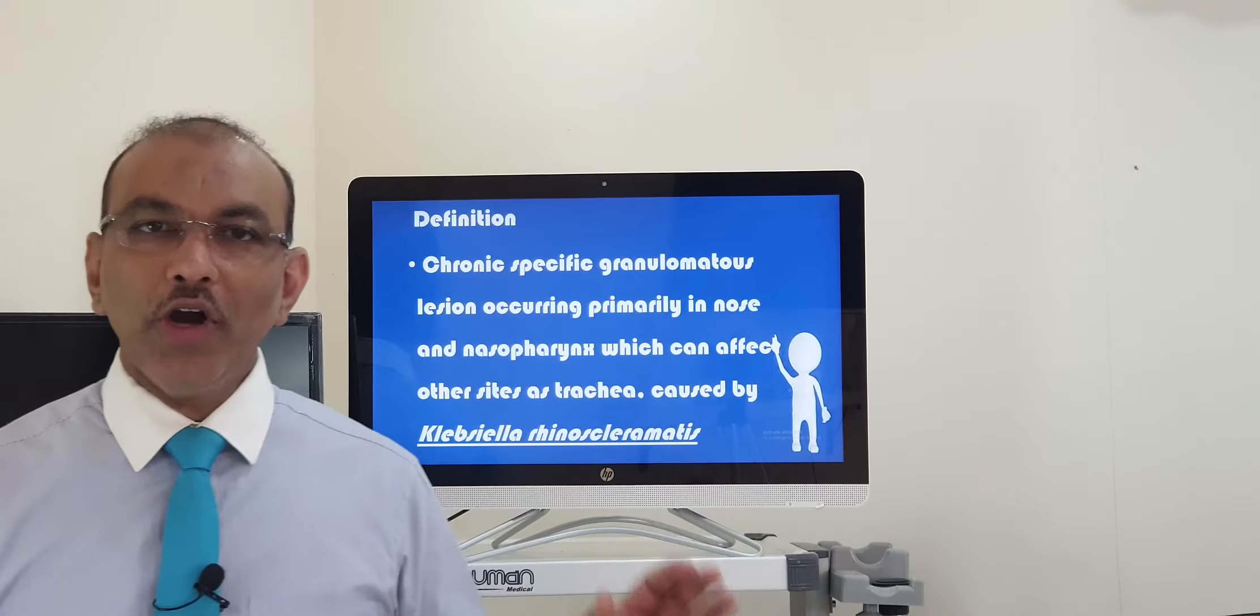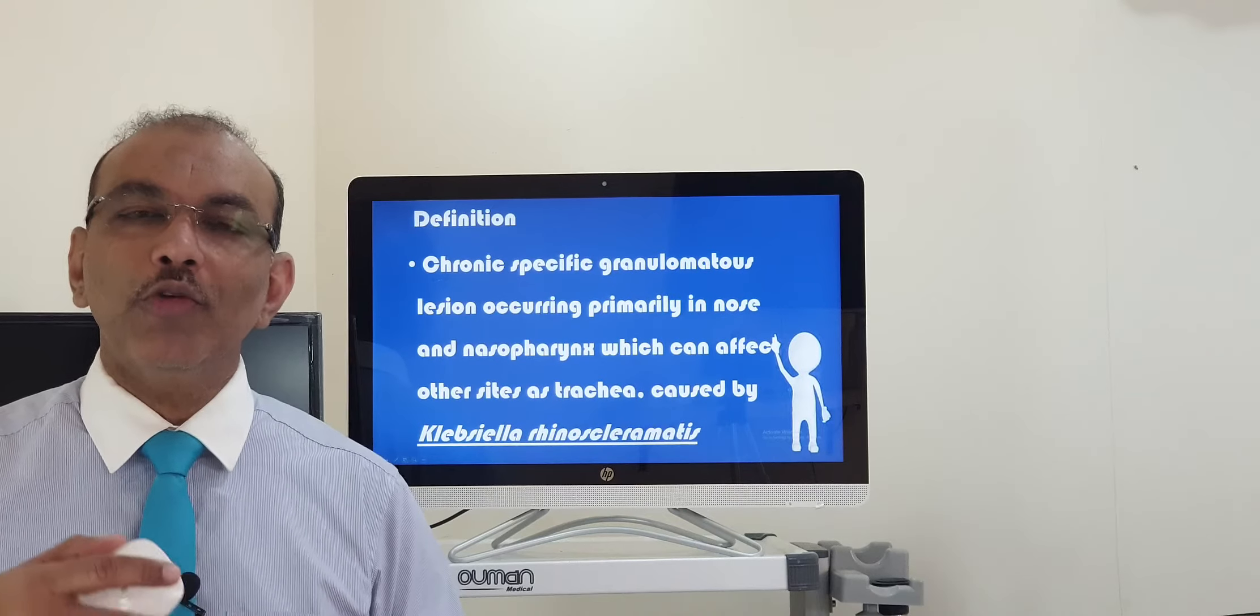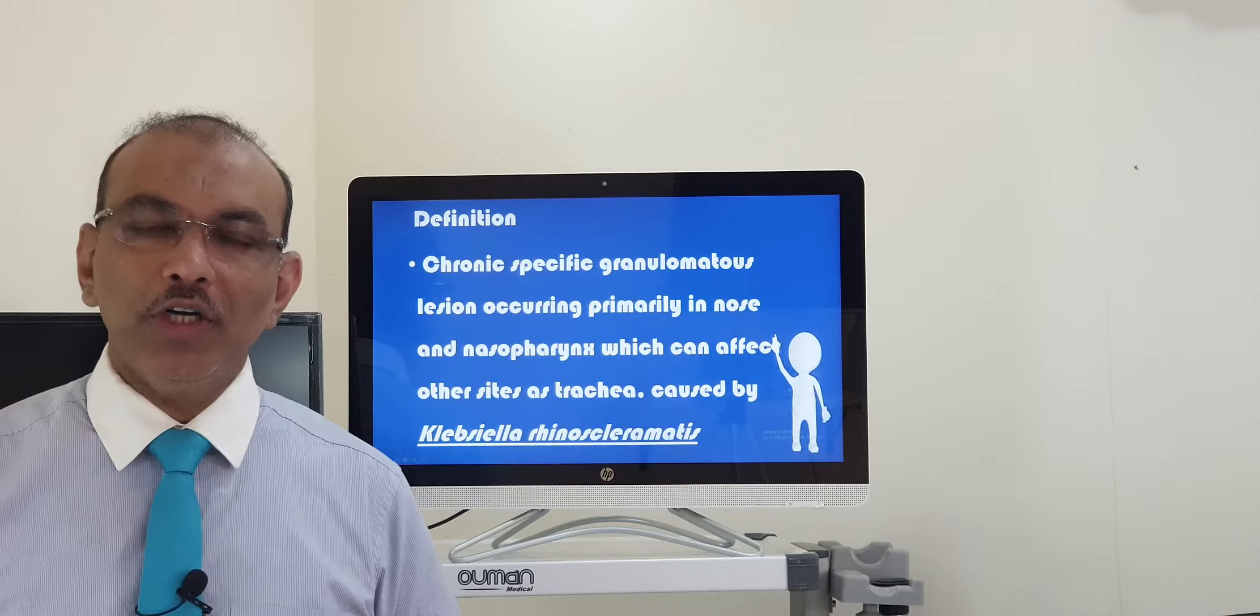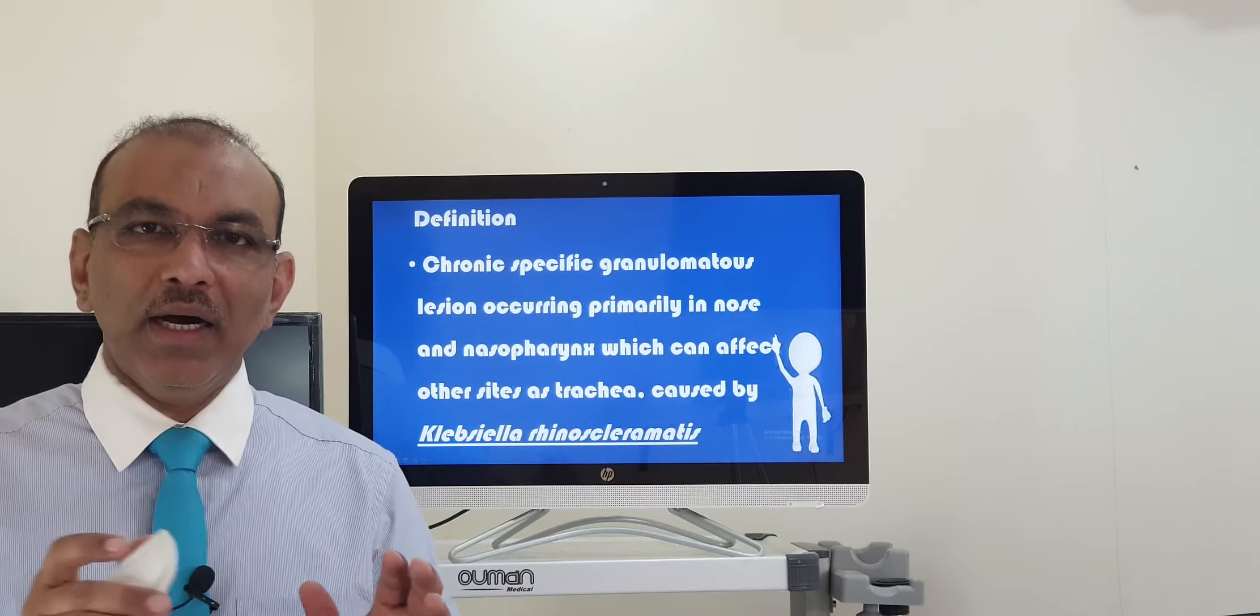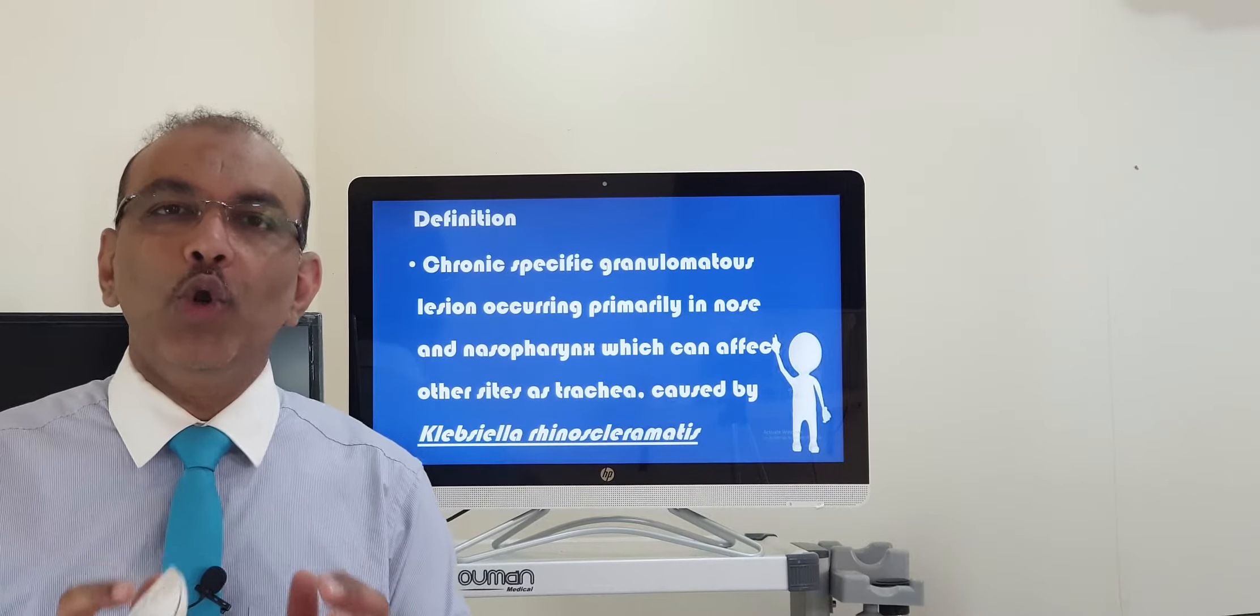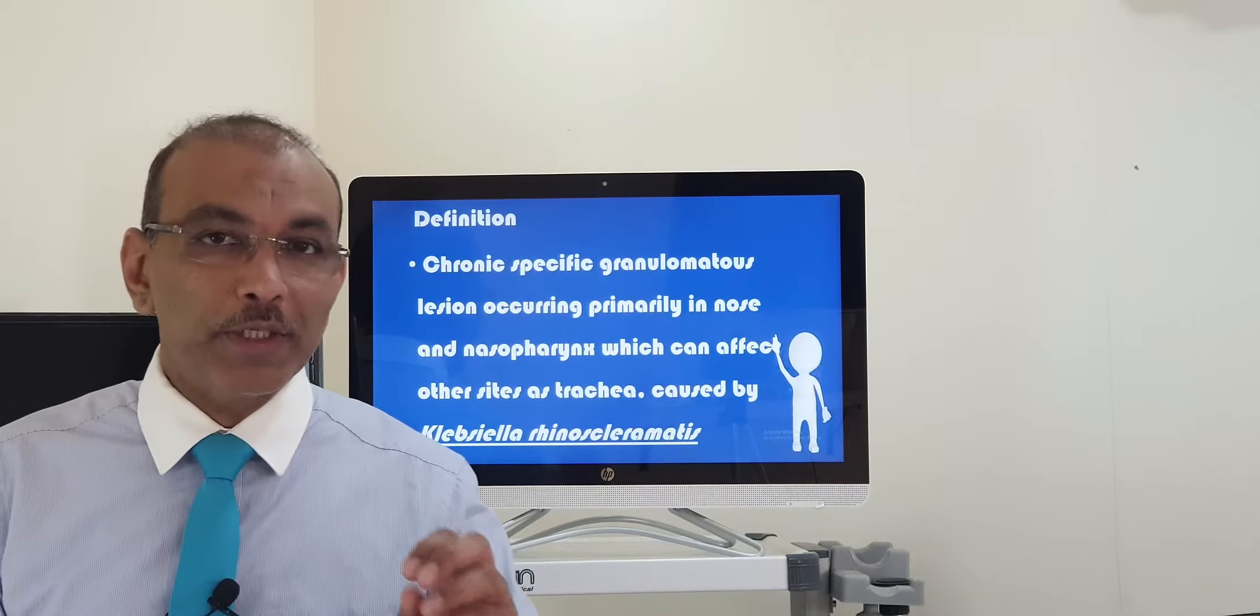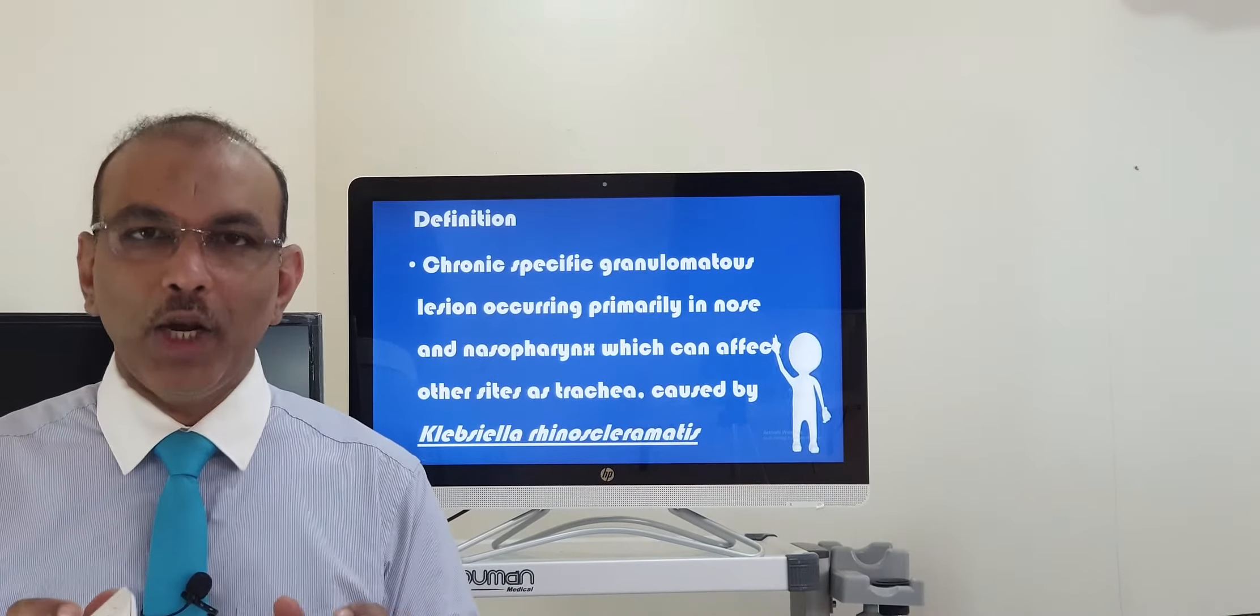This condition is a chronic granulomatous condition. Chronic means it is more than three months, it goes on for months to years together. It is granulomatous because from the blood, specific cells get accumulated in groups to form granuloma. This is seen only in microscopy, in pathology from the specimen sent for examination. So it is a chronic granulomatous condition.